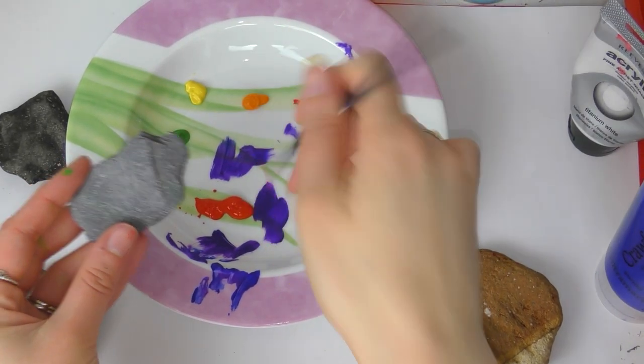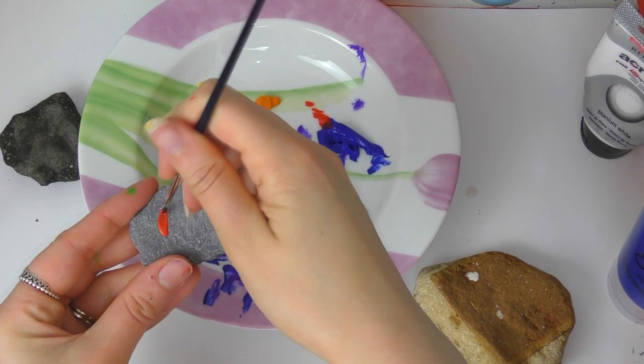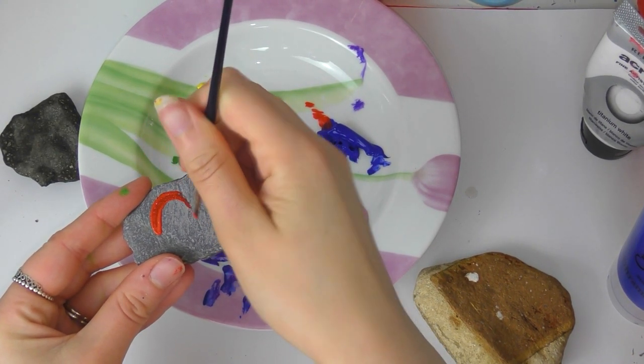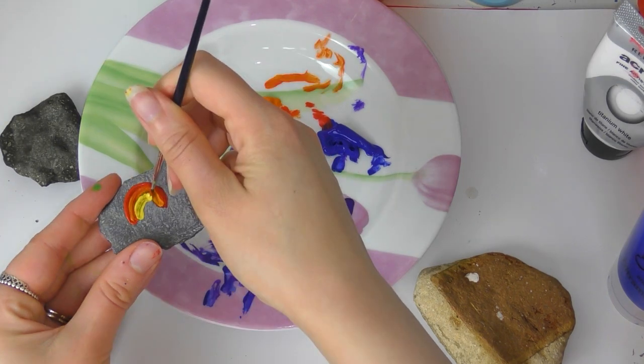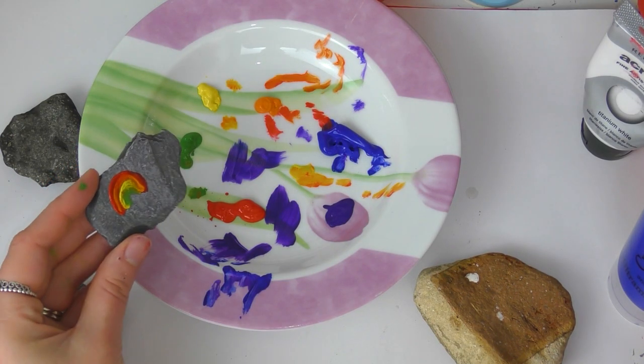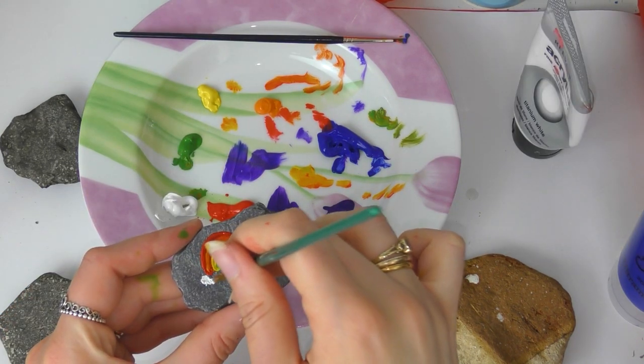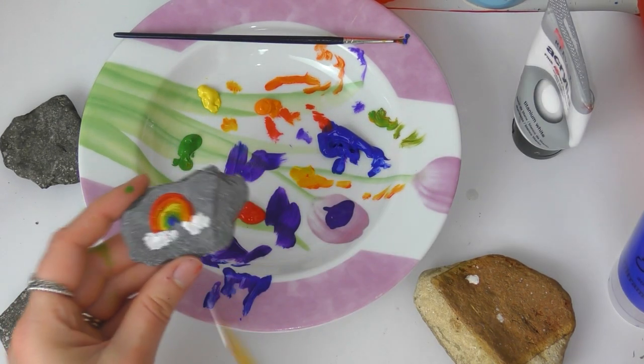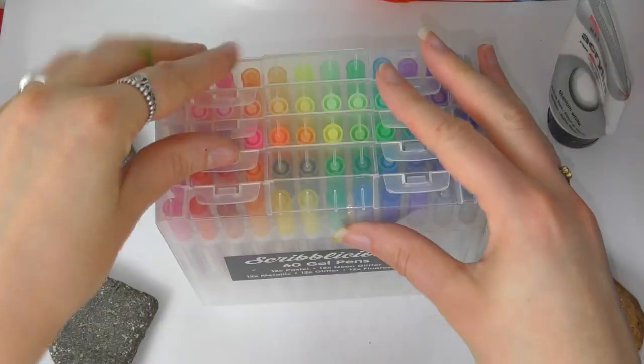Once your stones are clean you then can paint a rainbow on like so. I'm just painting a very simple rainbow, just going round the curves with each color like this, and then adding some clouds with some white paint at the end of the rainbow. That's all you really need to do. It's so nice and simple.